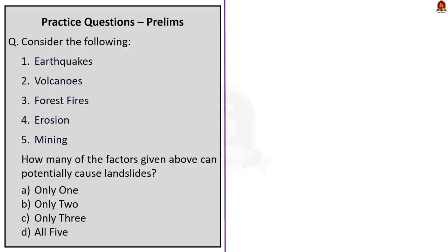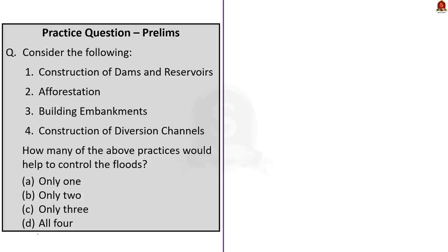Look at this question about landslides. Five factors are given — Earthquake, Volcano, Forest fires, Erosion, and Mining — and you have to find how many are potential causes of landslides. Here, all five factors can cause landslides. Even if you are not sure whether volcanoes can cause landslides, looking at the options, there is no option for only 4, which means the answer must be all 5. It is always wiser to look at your options. So the correct answer is option D, all 5. Now look at the question about flood control — four statements given: construction of dams and reservoirs, afforestation, building embankments, and construction of diversion channels. All four practices help control floods, so the correct answer is option D, all four.